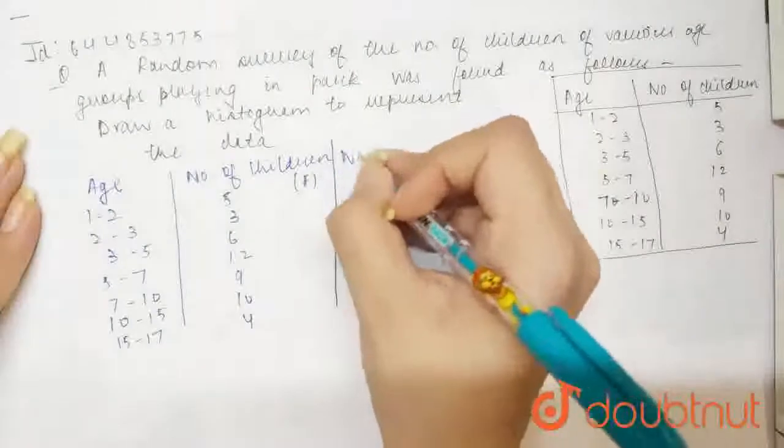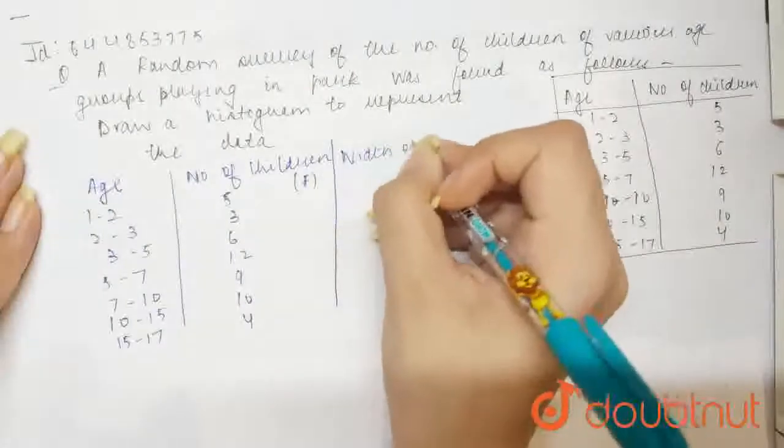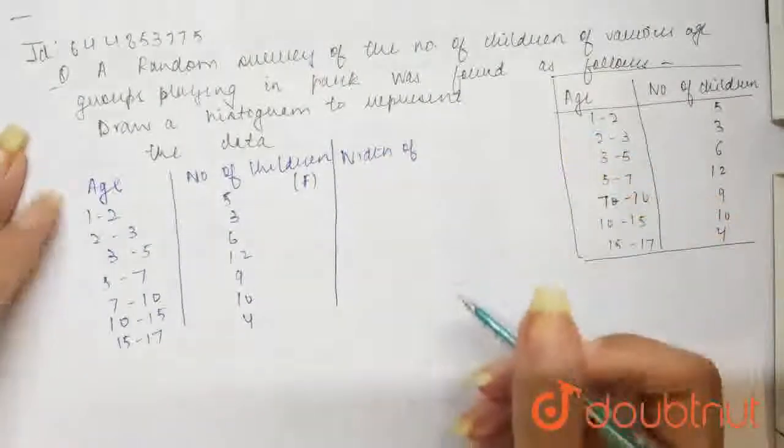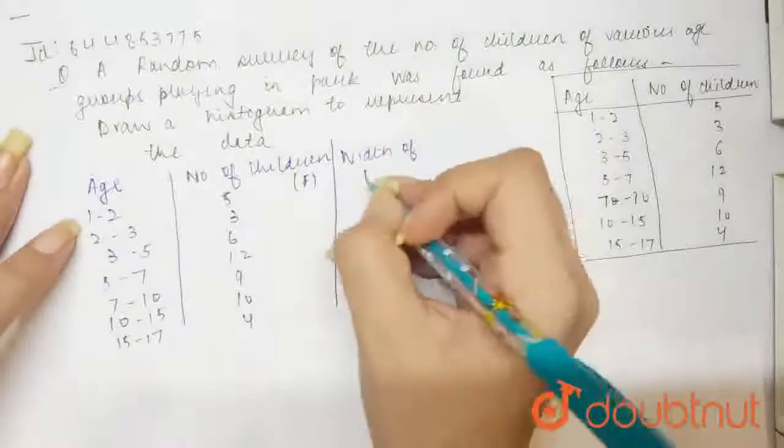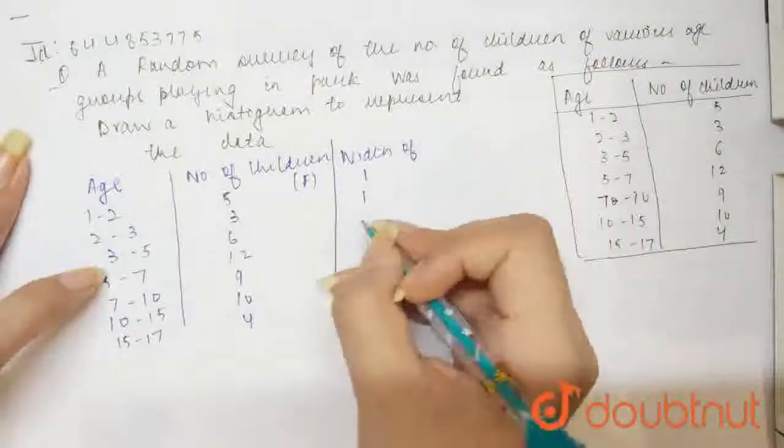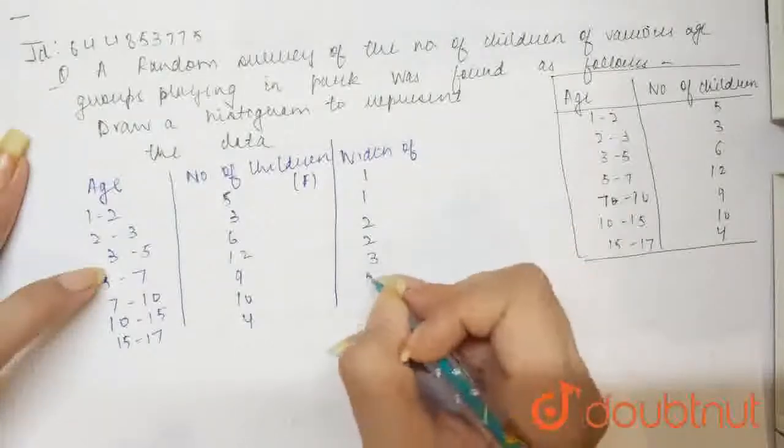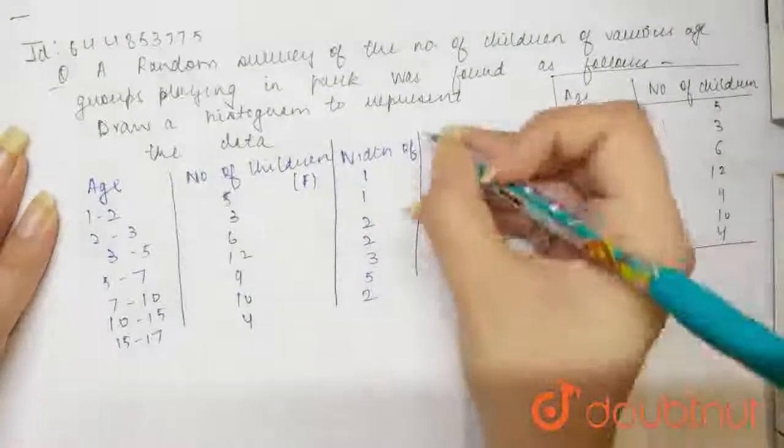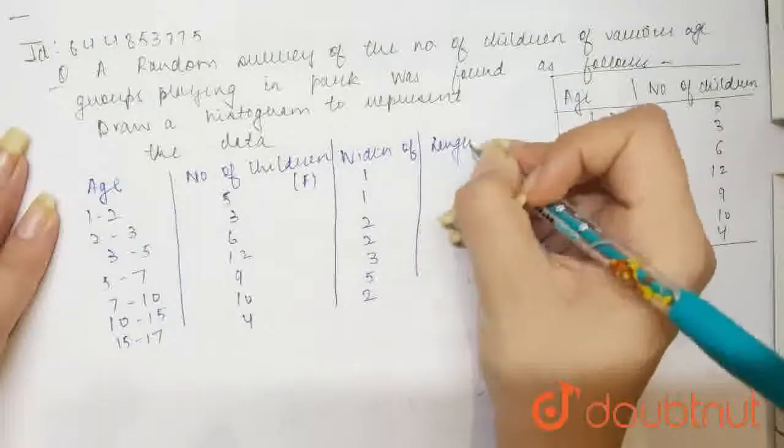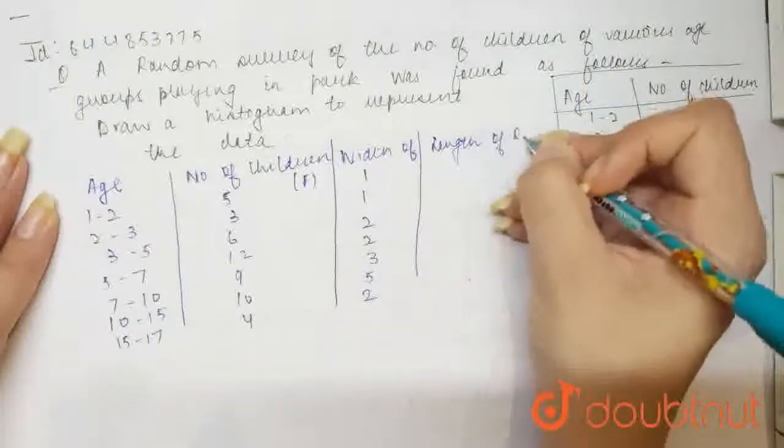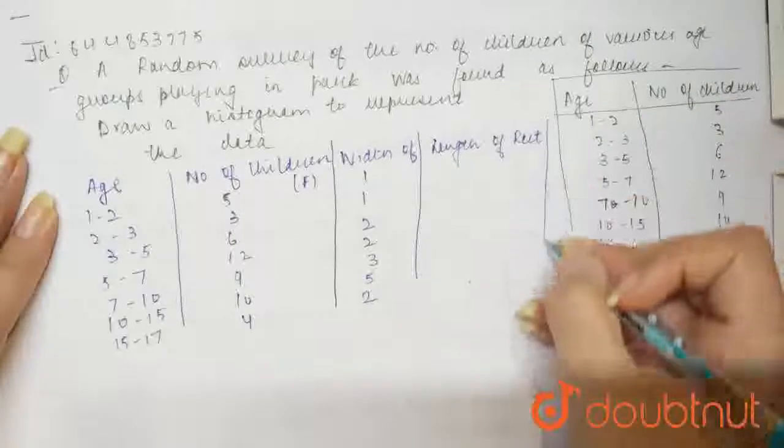Now we will find the width of the class. So here what is the width of the class? 1, this is 2 and this is 2, this is 3, this is 5, this is 2. Now what we will do, we will find the length of rectangle.